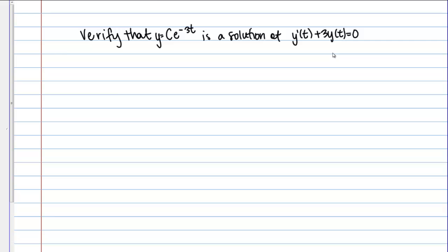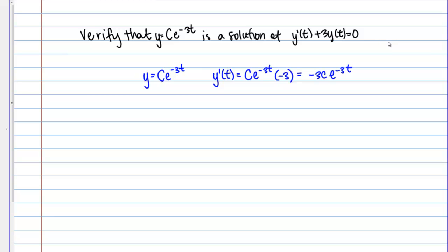We're going to approach this in the exact same way as verifying a single solution. I want to take my proposed solution y and plug it into the differential equation. Looking at y equals ce to the negative 3t, I need to know y prime of t. Taking the derivative, c is a constant so it stays out front, then I've got e to the negative 3t times negative 3. So negative 3ce to the negative 3t is my first derivative.